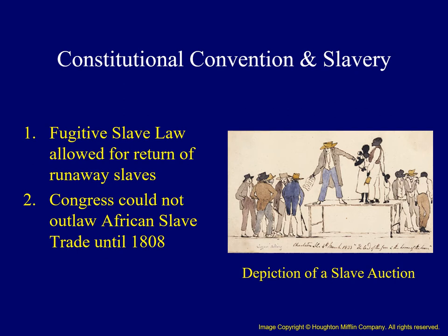The issue of slavery appeared in association with two additional issues at the convention. First, a fugitive slave law was included which required states to allow for the return of runaway slaves. Secondly, the Constitution prohibited Congress from outlawing the slave trade until 1808. The words 'slave' and 'slavery' do not appear in the Constitution, as the delegates were clearly embarrassed by supporting the institution. However, the framers of the Constitution clearly had limited views of what was meant by the words equality and freedom.